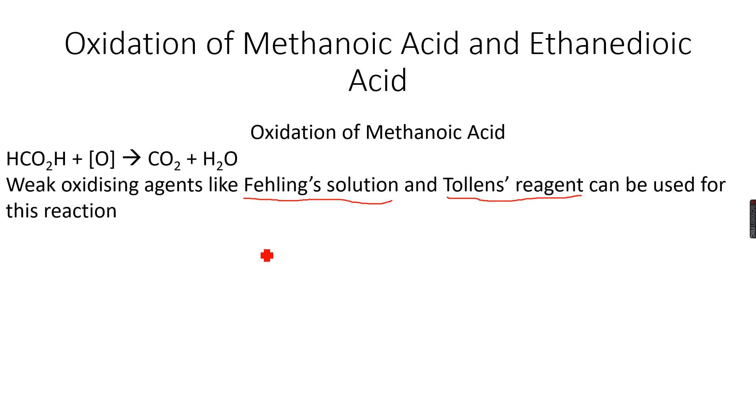And now let's move forward. We can also use potassium dichromate which is K2Cr2O7, it is also a weak oxidizing agent. So we can also use this to oxidize methanoic acid. Now let's move forward.